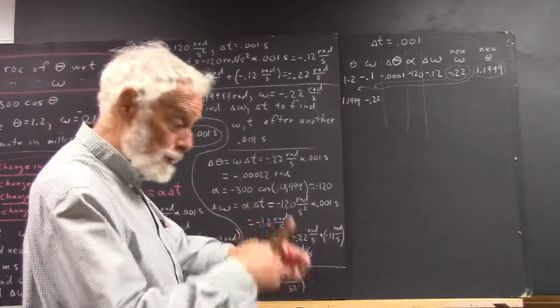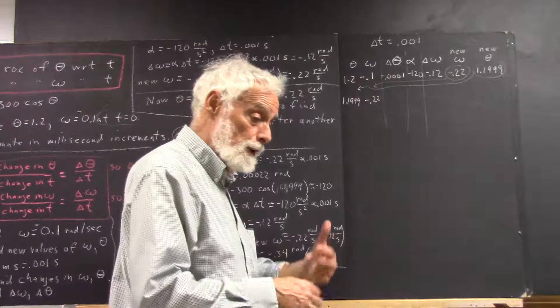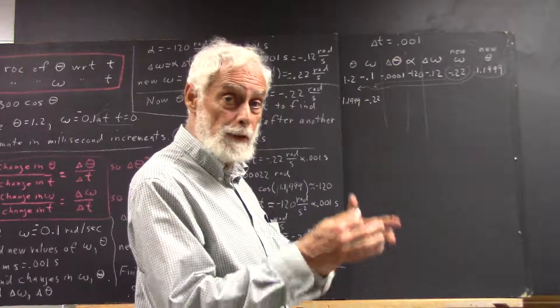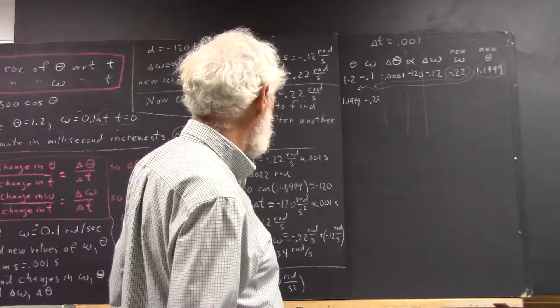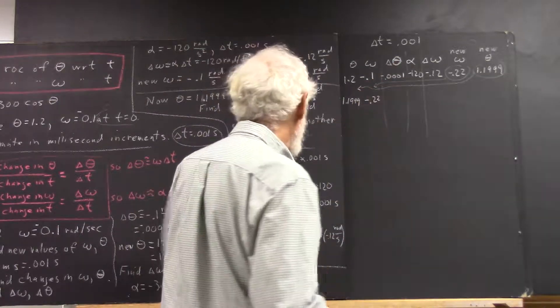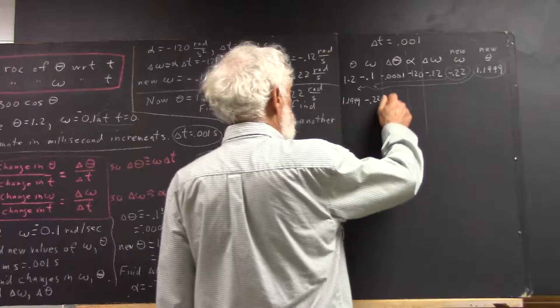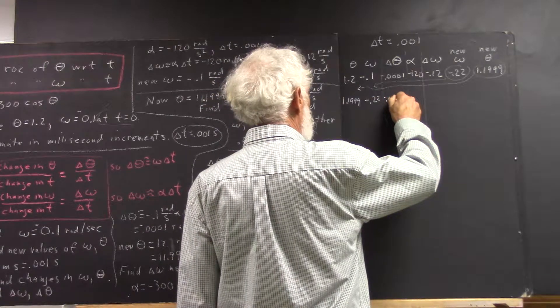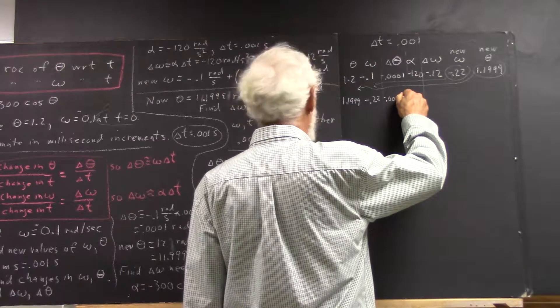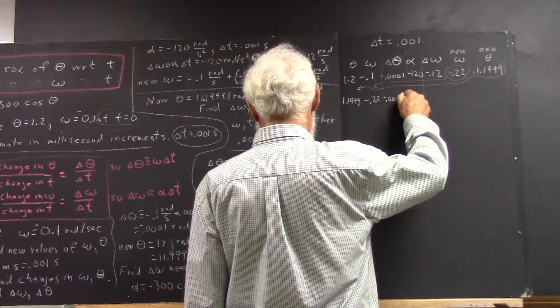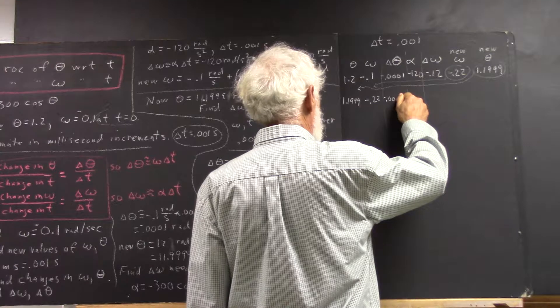Once you've done that, maybe you can follow the calculation scheme, get the numbers, then go back and think about them and see if they make sense. Okay, well delta theta in this case then would have been negative 0.000022.